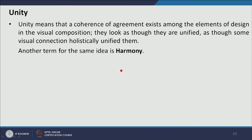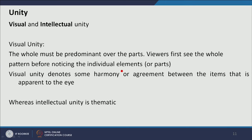Unity means there is a coherence of arrangement among the elements of design in the visual composition. They look as though they are unified, as though some visual connection exists in the holistic composition. Another term for unity is harmony. We should not confuse visual and intellectual unity. Visual unity is when we visually connect different elements of design.